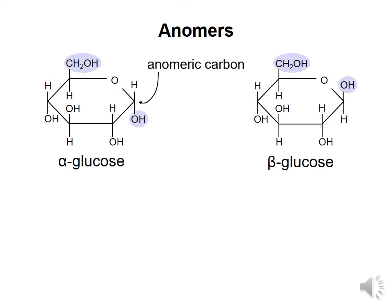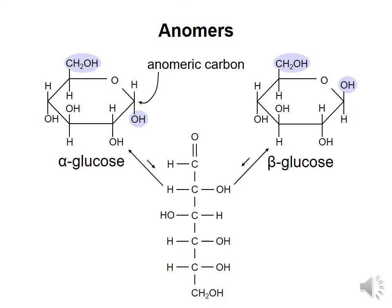Remember that the cyclization reaction is reversible. This means that the anomers of a monosaccharide can convert back and forth in solution. The ring structure can open to form the linear structure, and then re-close with the hydroxyl in either the alpha or the beta configuration.